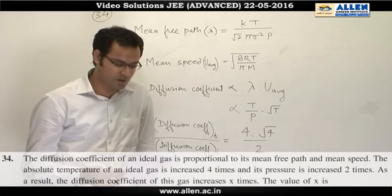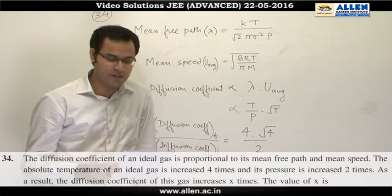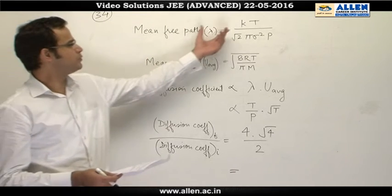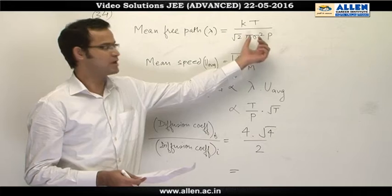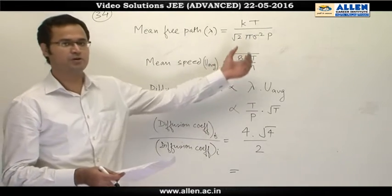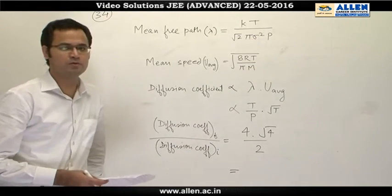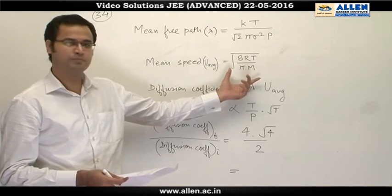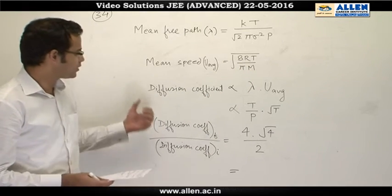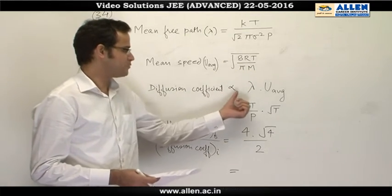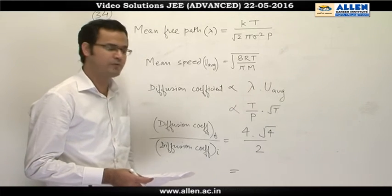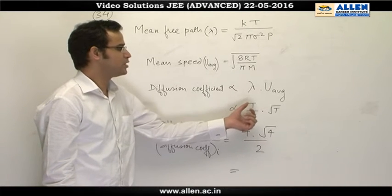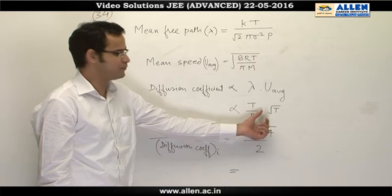Question number 34. In the given question, diffusion coefficient is directly proportional to the mean free path and mean speed. kT upon root 2 pi sigma square p, where sigma is collision diameter, T is temperature, p is pressure, and k is Boltzmann constant. Mean speed, which is u average, equals under root 8RT by pi m, where m is molecular mass. According to the question, diffusion coefficient is directly proportional to lambda multiplied by u average. In terms of pressure and temperature, diffusion coefficient is directly proportional to temperature upon pressure multiplied by square root of temperature.